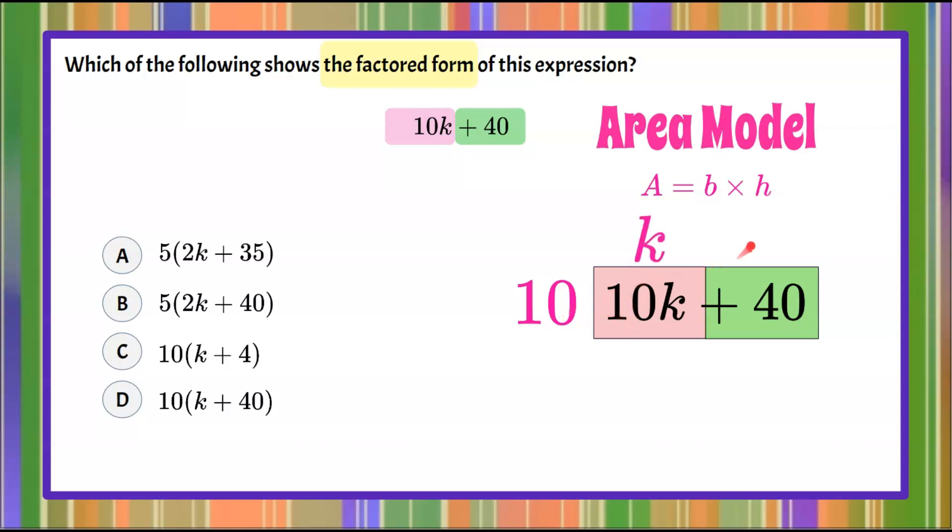Then 10 multiplied by what will give us an area of 40? We know that 10 times 4 is 40. And then we want the whole width of this side, which is k plus 4.